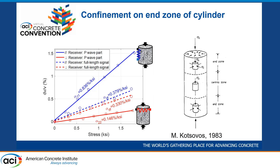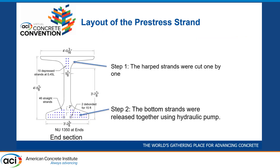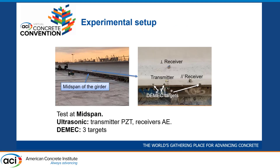We now apply the same method on a full-scale bridge girder. This bridge girder was freshly cast and waiting for pre-stress release. The layout of the top strands and the bottom strands are shown in the photo. Our test was conducted at the mid-bottom of the girder. During the pre-stress release, the top strands were cut one by one, and the bottom strands were released together with a hydraulic pump. The ultrasonic test setup is the same as that of the small concrete beam, and DMATC targets were used to measure the strains after the pre-stress release.